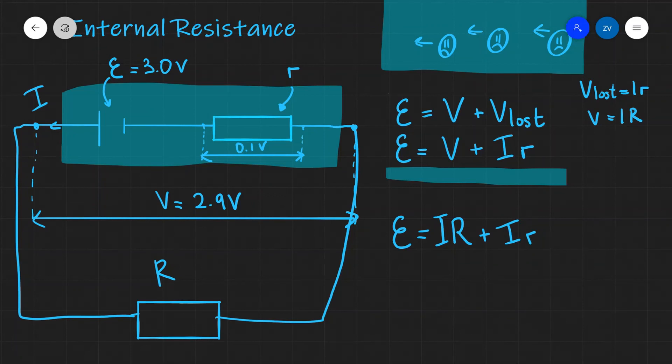We can factor out the current to get our second formula for internal resistance. That is, the EMF equals I times the sum of the resistance in the circuit plus the internal resistance.